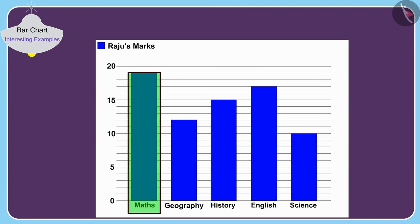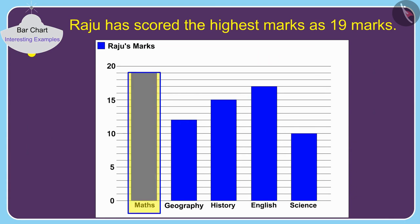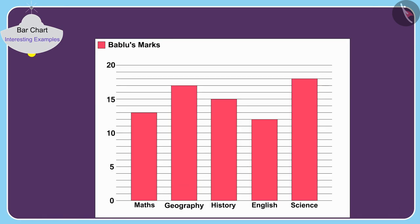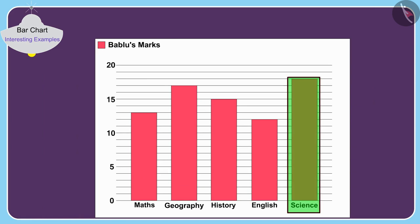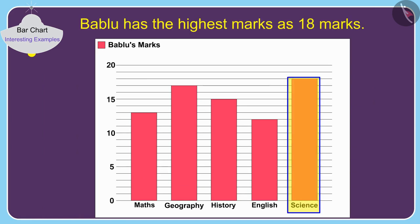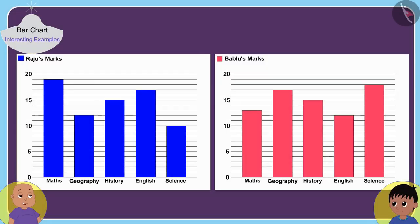So Raju has scored the highest marks — 19 marks in mathematics. And the highest rectangle in Babloo's bar chart is in science, so Babloo has the highest marks as 18 marks.